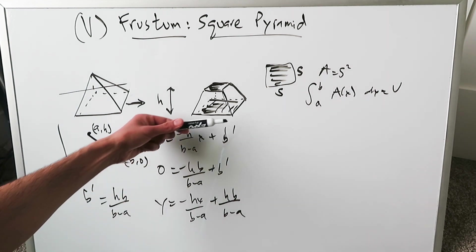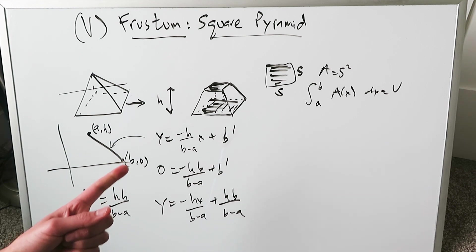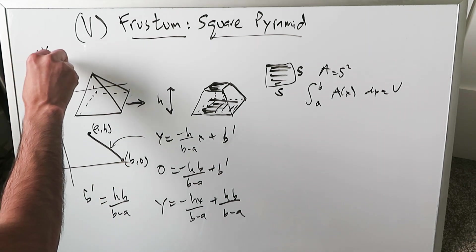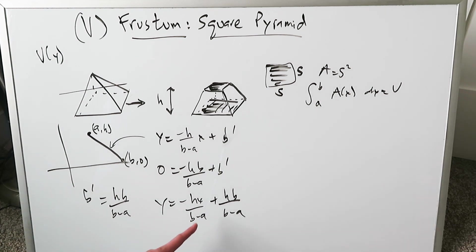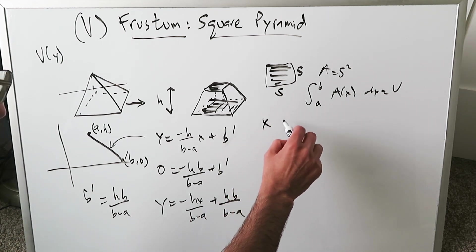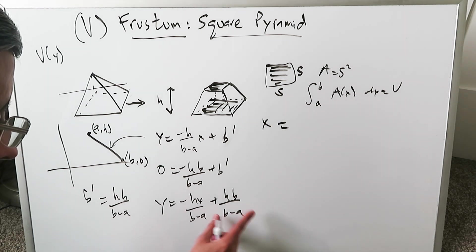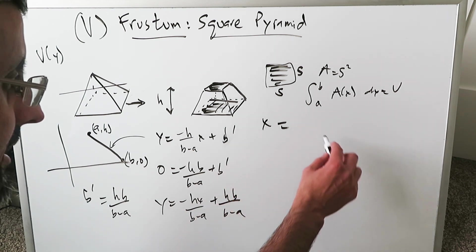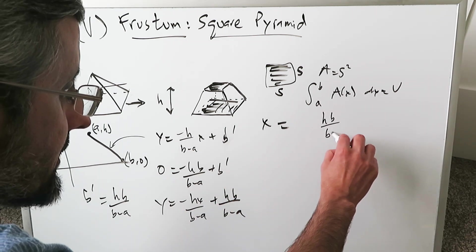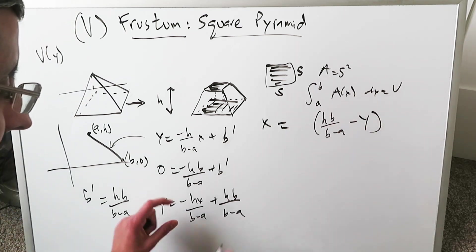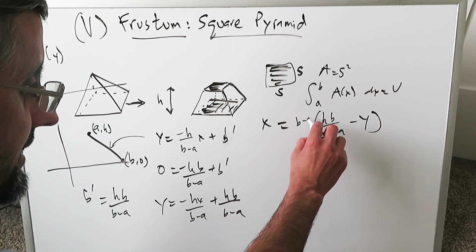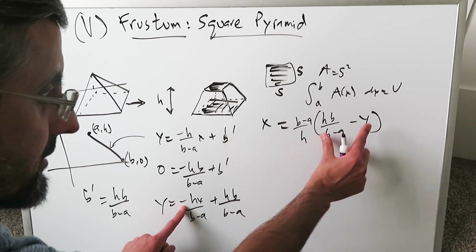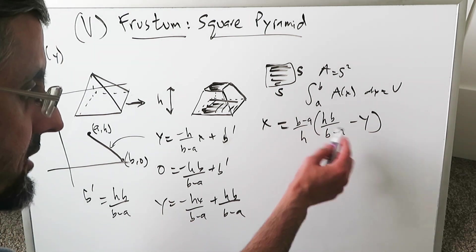I'm going to do volume with respect to Y, going upwards with regards to my limits. Hence, I have to convert this into X equals format. X equals, I take the Y intercept to the other side, flip the slope factor, and reverse the signs. Everything becomes HB over B minus A minus Y times B minus A divided by H. You can open this up.